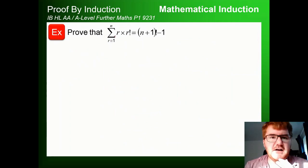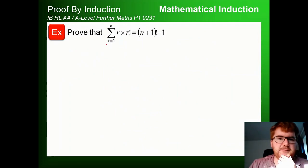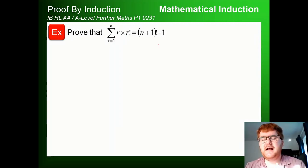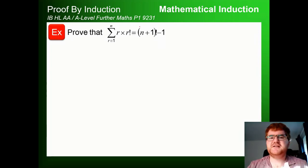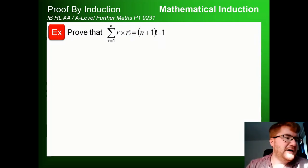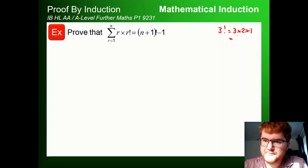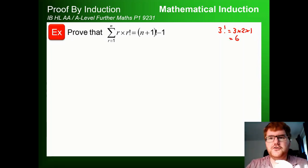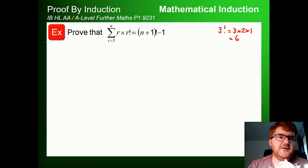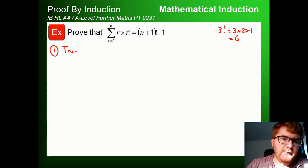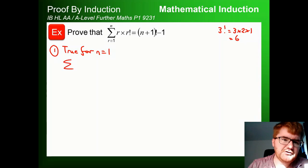On to example 2. We're going to show that the sum from r=1 to n of r·r! equals (n+1)!−1. Remember, the exclamation mark means factorial — for example, 3! = 3×2×1 = 6. The first thing we need to do is establish it's true for n=1.